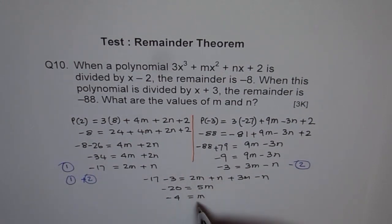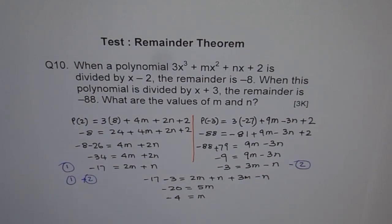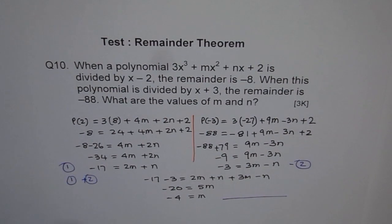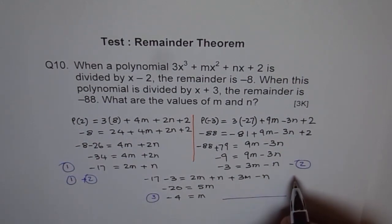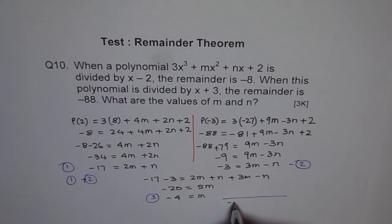Now once you know m, you can plug it in an equation and find the value of n. So we can use equation 2. We will put m here in equation 2. Let's call this equation 3. So when I put 3 in 2, I get -3 equals 3 × (-4) - n. So I bring n here and this is -12 + 3 which is -9. Perfect.